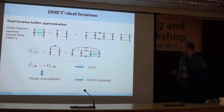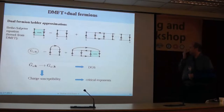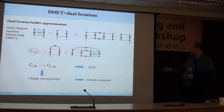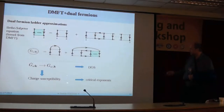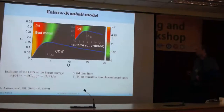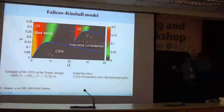So let's go and do our dual fermion approximation. We start with the DMFT, build the dual fermions on the two-particle level. From there, one gets the dual fermion Green's function, which is related to the real Green's function. Once one has this object, one gets the density of states, the charge susceptibility, and from there also critical exponents. And this is the phase diagram one gets.